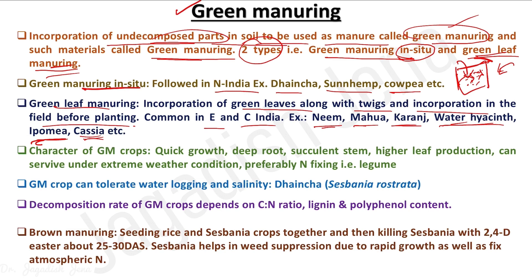The ideal characteristics of a green manuring crop are: it should preferably be a leguminous crop; it should have quick growth so it can be incorporated in a short period, leaving enough time for land preparation and sowing of the main crop; it should be deep rooted to extract water and nutrients from deeper soil layers; it should have a succulent stem for low C:N ratio and easy decomposition; and it should have higher leaf and biomass production to add more organic matter and nutrients to the soil. It should also be able to survive under extreme weather conditions.